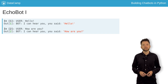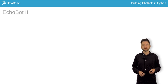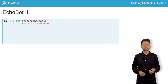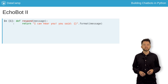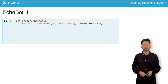To build an EchoBot, you need to define a respond function, which takes a message as an argument and returns an appropriate response. Here, we define a function using the keyword def, then the name of the function, then its arguments in parentheses, and then a colon. The body of the function is indented by one level.